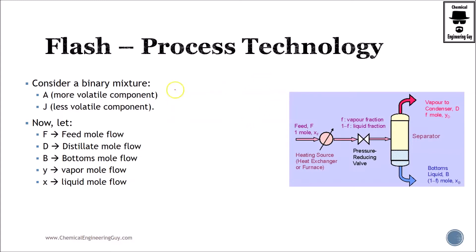We will be talking about a binary mixture. Let's say A is the more volatile component, meaning it will evaporate faster or more readily, and J is the less volatile component, which will not evaporate as easily as A — though that doesn't mean J is not volatile.